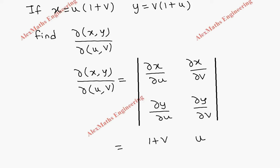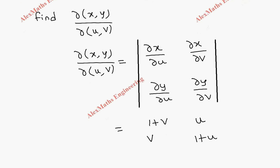Then ∂y/∂v: here (1+u) is constant, so we write (1+u) as is, and the differentiation of v is 1. So we got the determinant and now we expand it.